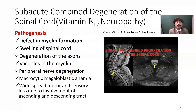There is demyelination with degeneration of axons and vacuoles in the myelin and peripheral nerve degeneration. Myelin is lost. There will be macrocytic megaloblastic anemia and widespread motor and sensory loss due to involvement of the ascending and descending tracts.